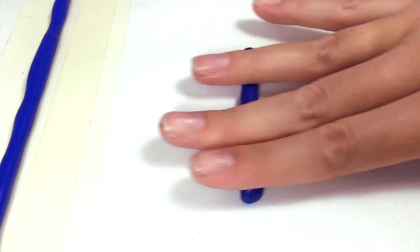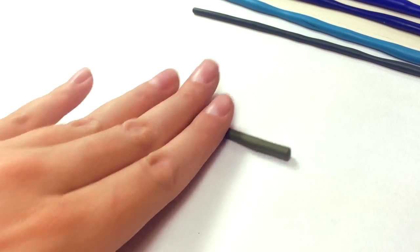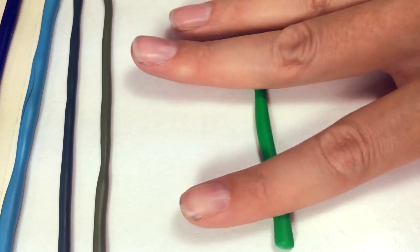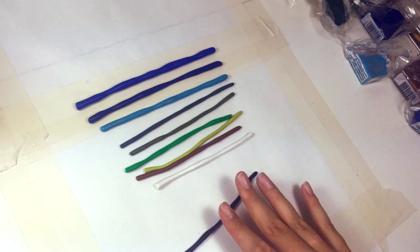Then I roll out the rest of the colors: a navy blue, a turquoise, jungle green, olive green, green green, wasabi green, raw sienna, white, and black.